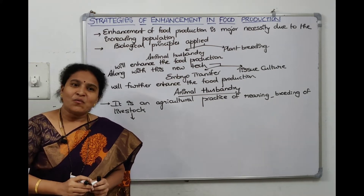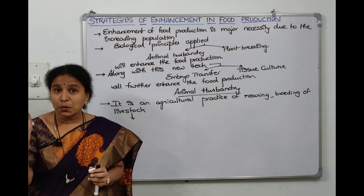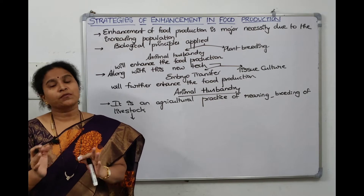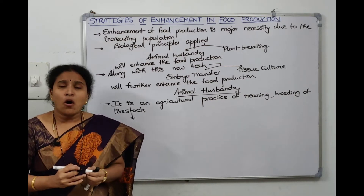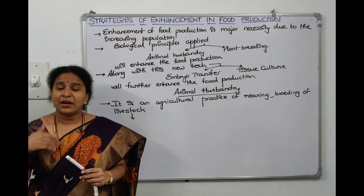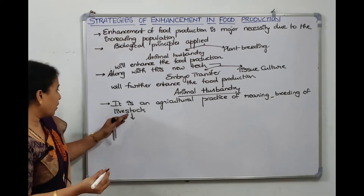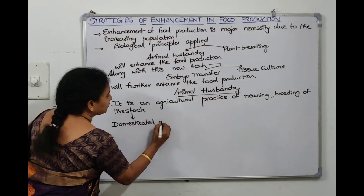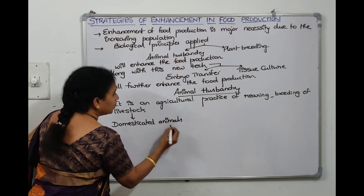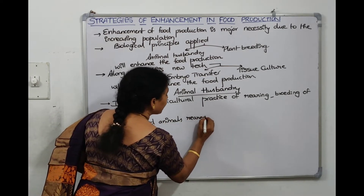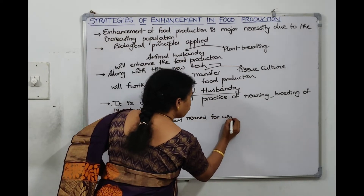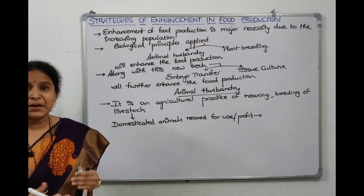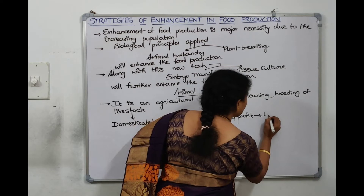What is livestock? Livestock refers to domesticated animals — not wild animals — which are reared for the use of mankind. All those domesticated animals which are reared or bred are called livestock. In other words, domestic animals reared for use or for profit are called livestock.